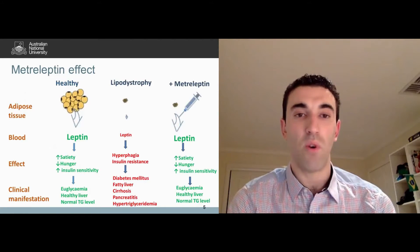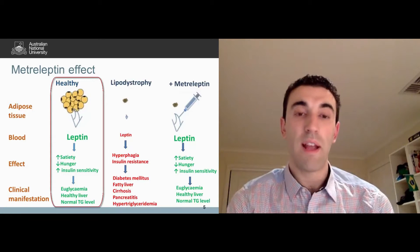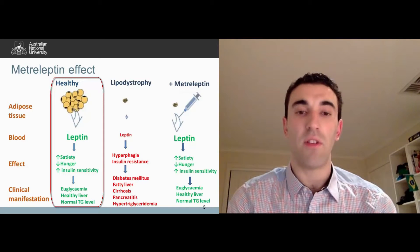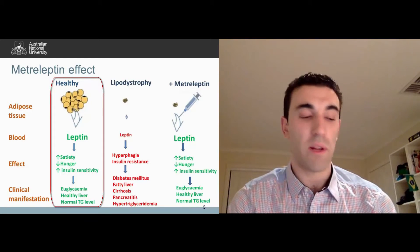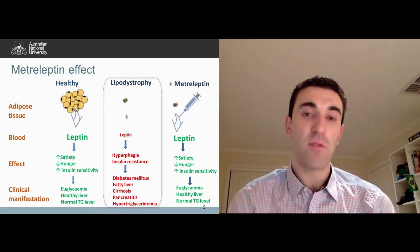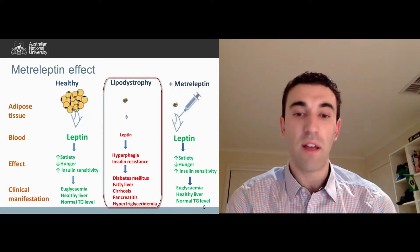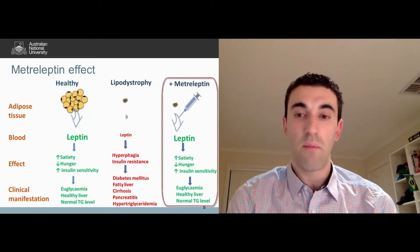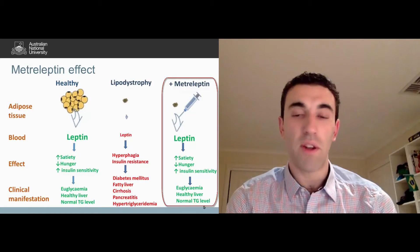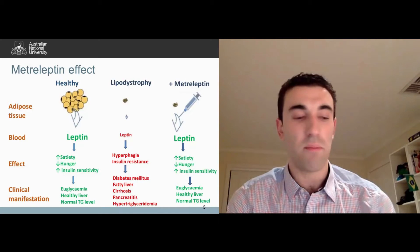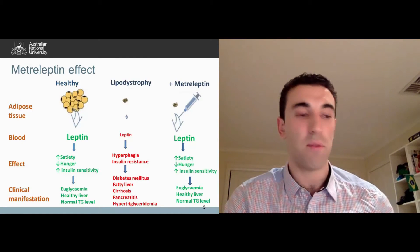Here's how Metreleptin works. In a healthy subject, adipose tissue is sufficient, meaning that leptin levels in the blood are sufficient, leading to a normal metabolic profile. In patients with lipodystrophy, however, adipose tissue is completely absent, meaning that leptin is at very low levels, leading to severe metabolic dysfunction. Metreleptin subsumes the role of adipose tissue in producing leptin, and the exogenous supplementation of leptin potentiates the reversal of these metabolic abnormalities.